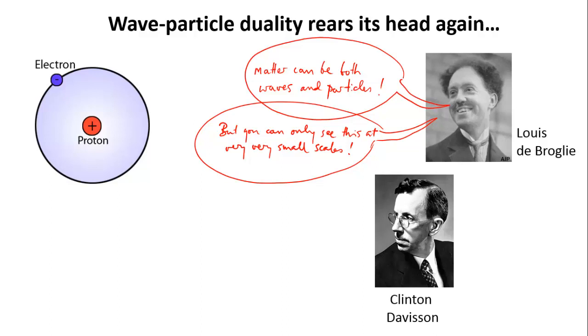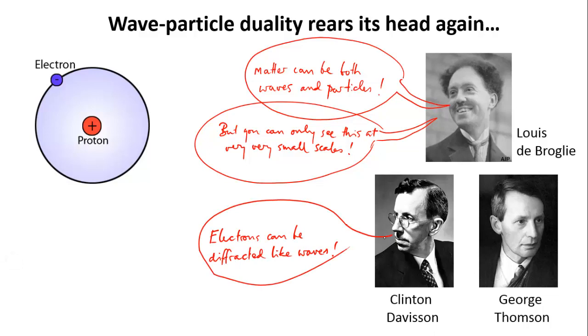Independently, in Aberdeen, George Thomson fired a beam of electrons through thin metal foil and showed the same thing.